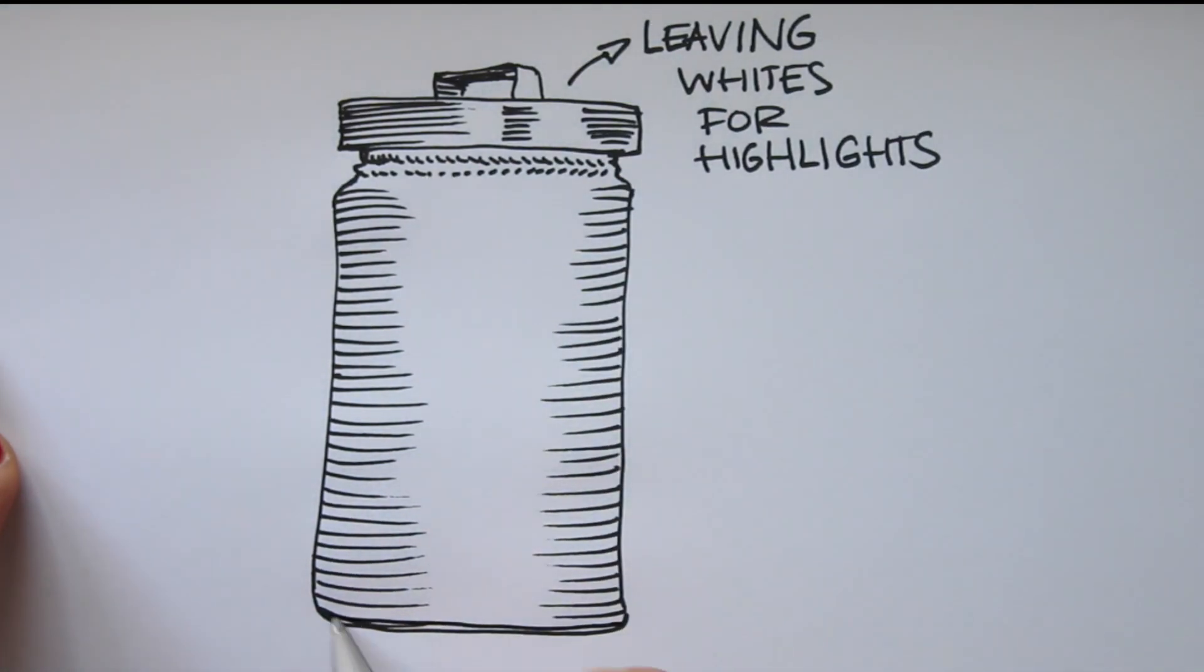The bottom of the jar is quite dark, so I cross hatch my lines to make that part darker.